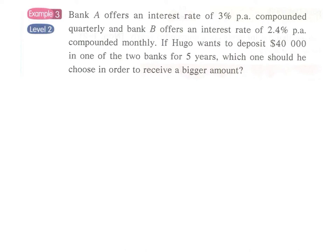Example three: Bank A offers an interest rate of 3% per annum, compounded quarterly — meaning four times per year. Bank B offers an interest rate of 2.4% per annum, which is lower, but the interest is compounded monthly — much more frequently. If Hugo wants to deposit $40,000 in one of the two banks for five years, which one should he choose in order to get a bigger amount at the end?